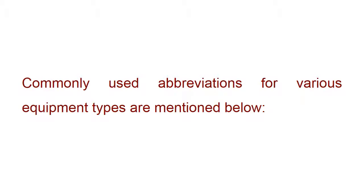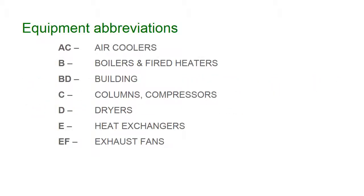Commonly used abbreviations for various equipment types are listed below. A - Air Coolers, B - Boilers and Fired Heaters, B - Deep Building, C - Columns.